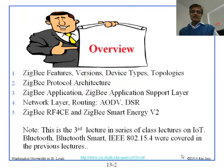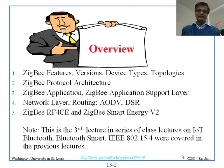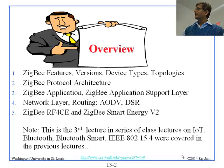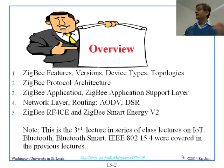We'll talk about Zigbee's features, different versions, device types, topologies, protocol architecture, and applications. An interesting thing in between is ad hoc networking. Since Zigbee is ad hoc networking, there are protocols for ad hoc routing which are used in Zigbee. I'm going to cover at least AODV and DSR. There are many others, but we won't get to them in this course. Then Zigbee R4CE and Zigbee Smart.